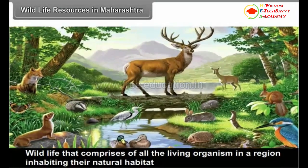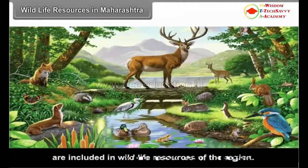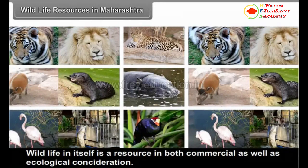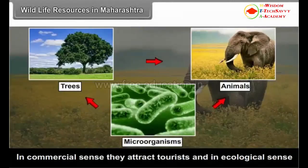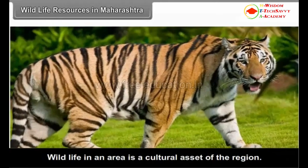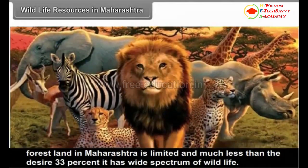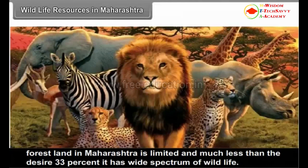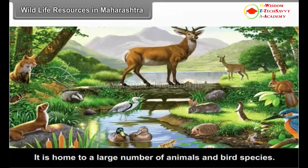Wildlife Resources in Maharashtra. Wildlife comprises all living organisms in a region inhabiting their natural habitat. Wildlife is a resource in both commercial and ecological consideration — in commercial sense they attract tourists, and in ecological sense they help maintain the forest ecosystem in perfect environmental balance. Wildlife in an area is a cultural asset of the region. Though forest land in Maharashtra is limited and much less than the desired 33%, it has a wide spectrum of wildlife because the state has a variety of forests ranging from semi-evergreen to scrubland vegetation, and is home to a large number of animals and bird species.